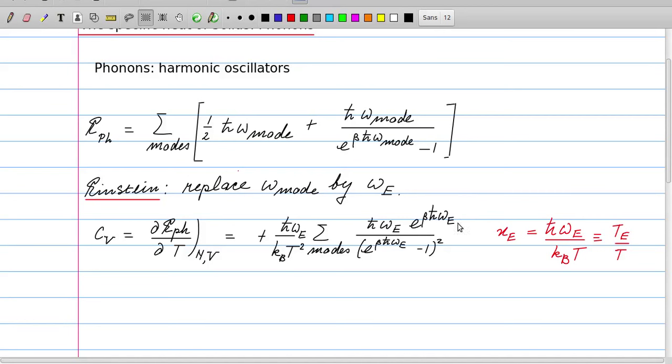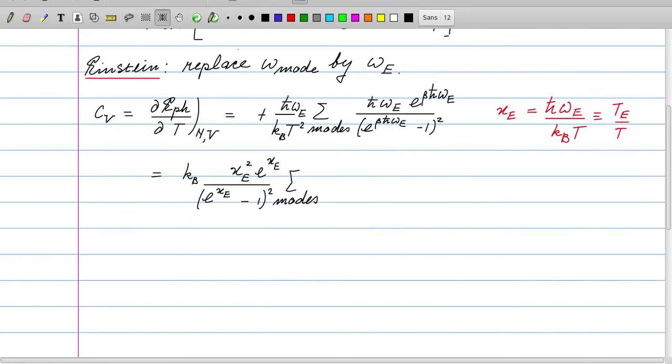We introduce a variable x_e which is the term we see here in the exponent. It's beta, which is 1 over k_b T, times h-bar omega_e. We can also write that as T_e over T where T_e is the Einstein energy. Then we can rewrite this in the following simple form.